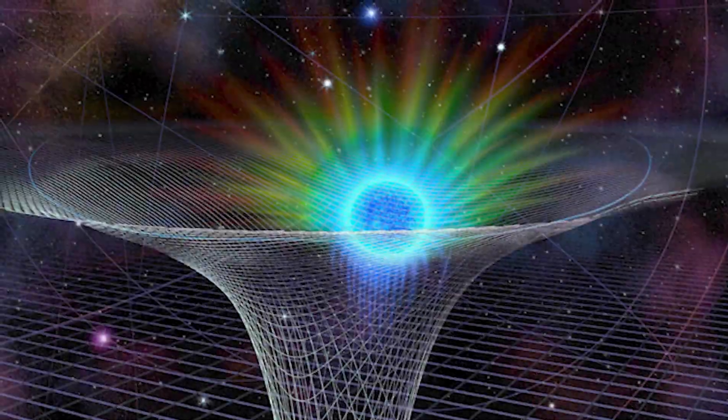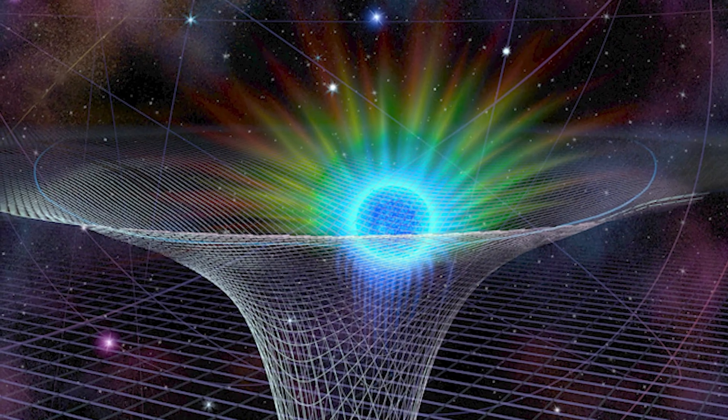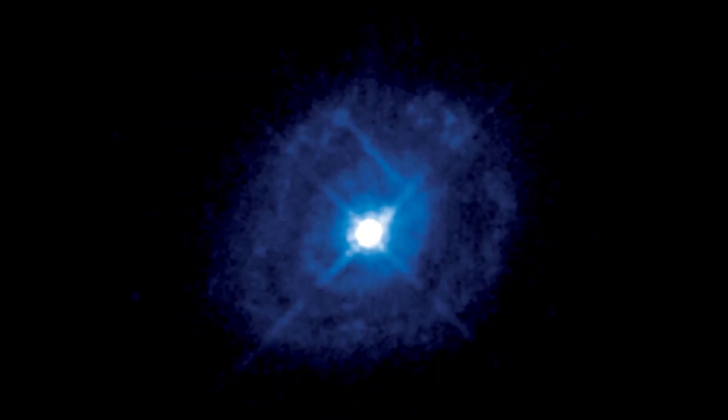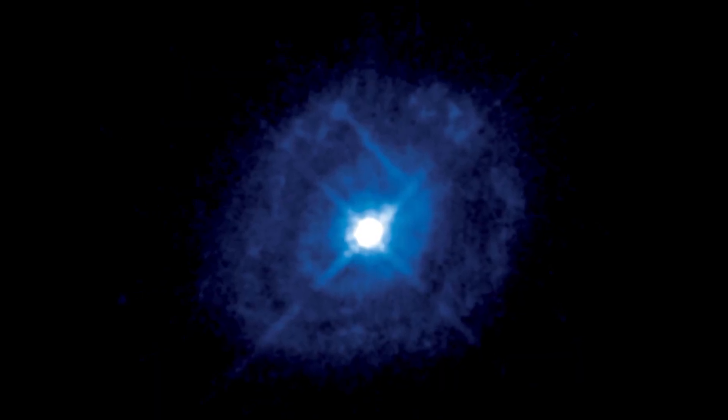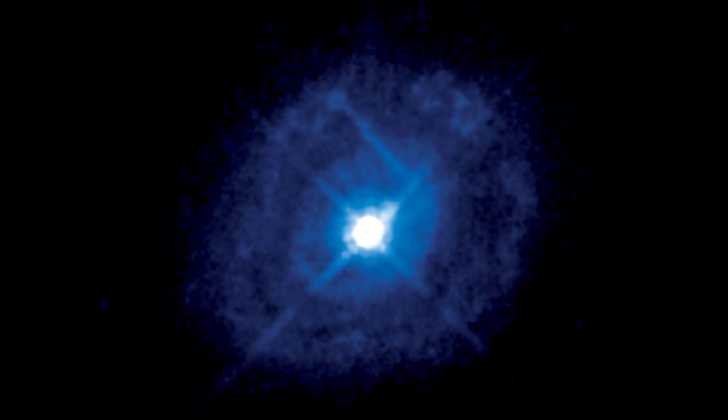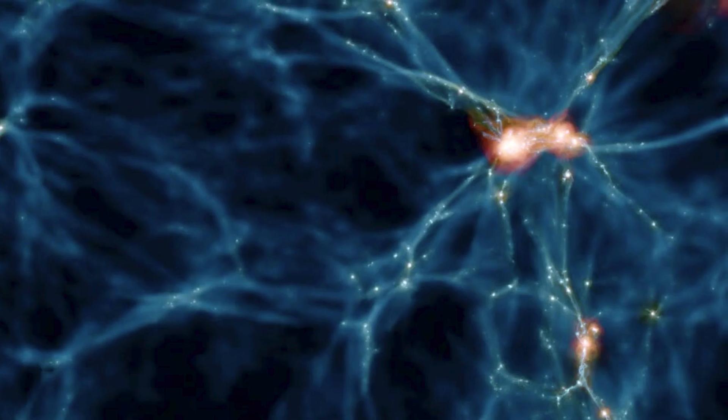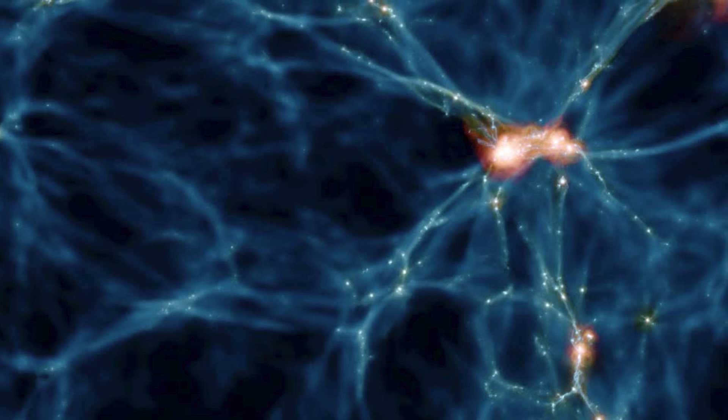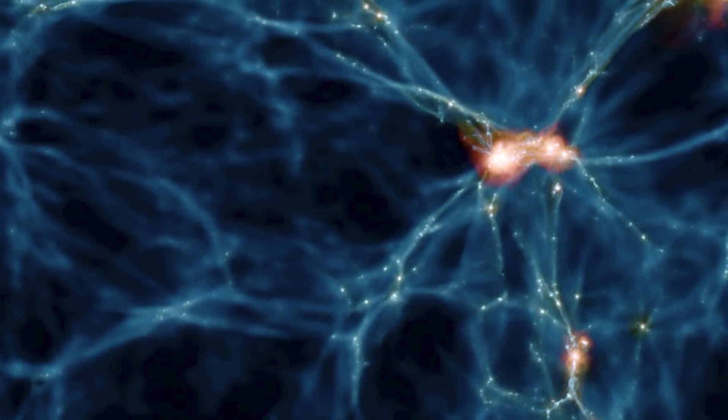When a supermassive black hole burrows itself into the galactic hub, it produces an active galactic nucleus, or AGN, which decimates the star formations within its galaxy. Simulations produced by the Romulus computer are essential in the understanding of this process.